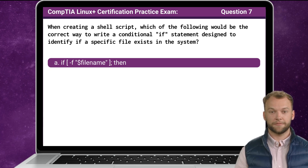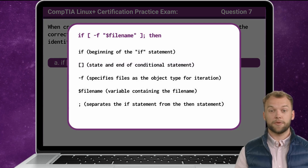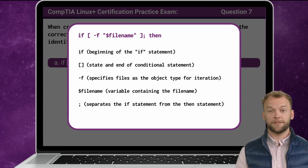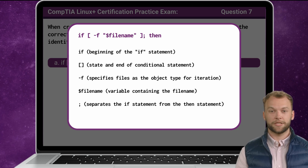The answer is A. Now that we know the answer, let's break it down. If is a shell construct that allows you to execute a command or a series of commands only if a certain condition is met. Inside the square brackets is where the condition is placed. In this case, if a file, designated by the dash F, matches a specific filename.